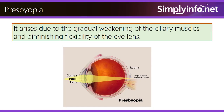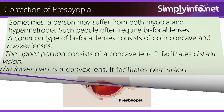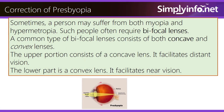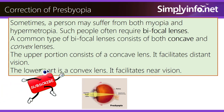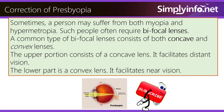Presbyopia arises due to the gradual weakening of the ciliary muscles and diminishing flexibility of the eye lens. Sometimes a person may suffer from both myopia and hypermetropia — such people often require bifocal lenses.